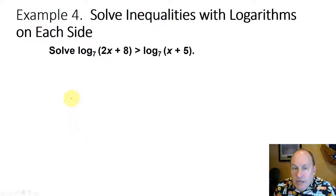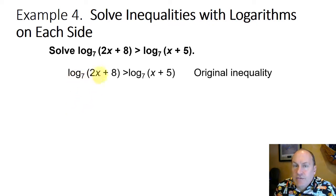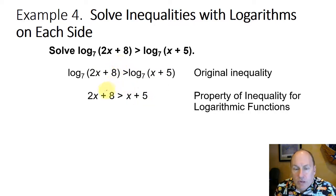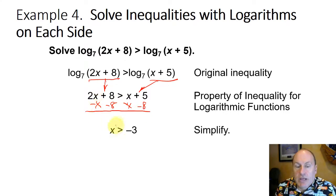Now, if we have logarithms on each side, we certainly have to make sure they have the same base. So if we have the log base 7 of 2x plus 8 is greater than the log base 7 of x plus 5, using the property for inequalities for logarithmic functions, the same operation has to apply for the input. Therefore, 2x plus 8 must be greater than x plus 5. Using a little algebra, if we subtract x from both sides and subtract 8 from both sides, we're going to isolate the variable and get x greater than negative 3.